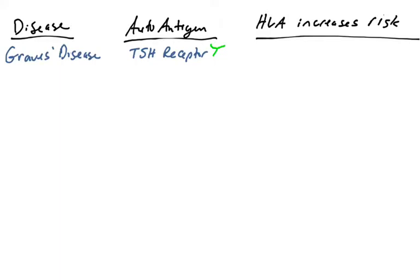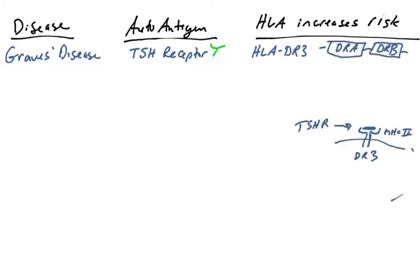We talked in a previous video about Graves' disease. In that disease, the autoantigen is the TSH receptor. Individuals make antibodies to the TSH receptor. To do that, you require antigen presentation. And there are HLA genes, specifically the DR3 genes, that if a person inherits, increases the risk of an individual to get Graves' disease.